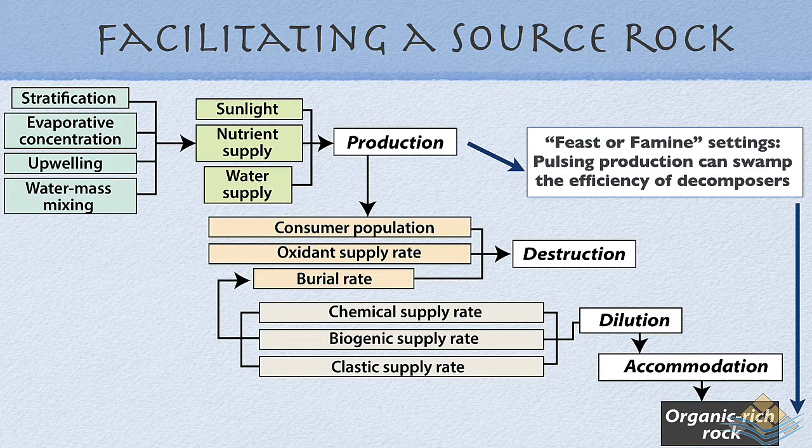Then we have an additional set of factors to consider in terms of how we get the organic material into the subsurface. If we have rapid sedimentation — whether clastic influx, biogenic production, or evaporite production — elevated levels of sediment input across any of those three groupings can dilute the organic content and so destroy that rock's ability to act as an efficient source rock.